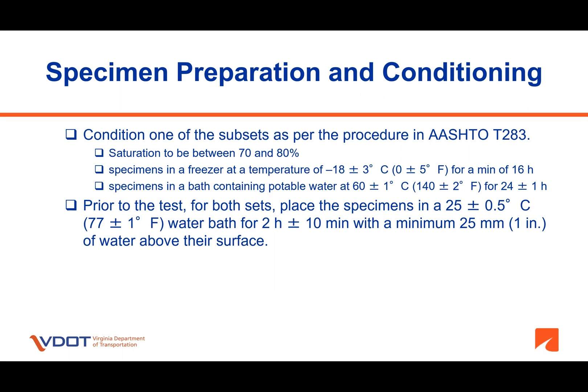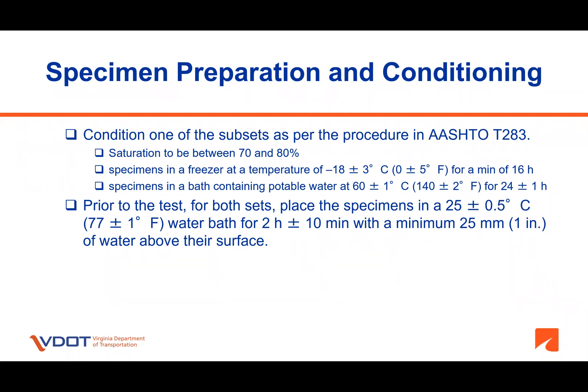Conditioning includes vacuum saturation of the specimens to a saturation level between 70 and 80%. Once saturation is done, specimens are subjected to a freeze cycle at -18 ± 3°C for a minimum of 16 hours. Once the freezing cycle is done, subject specimens to a thaw cycle in a water bath at 60 ± 1°C for 20 hours ± 1 hour. When the freeze-thaw cycle is completed for both the dry and conditioned sets, place the specimens in a 25 ± 0.5°C water bath for 2 hours ± 10 minutes. Note that specimens need to be submerged under water with a minimum 25 mm of water above the top surface.